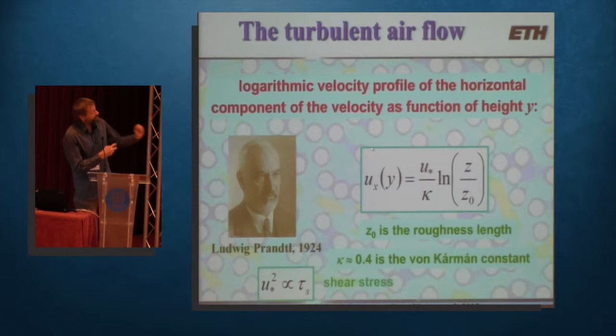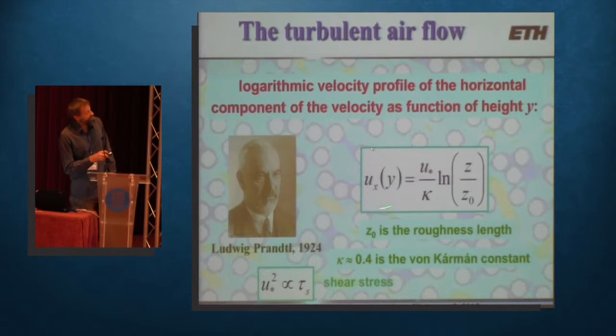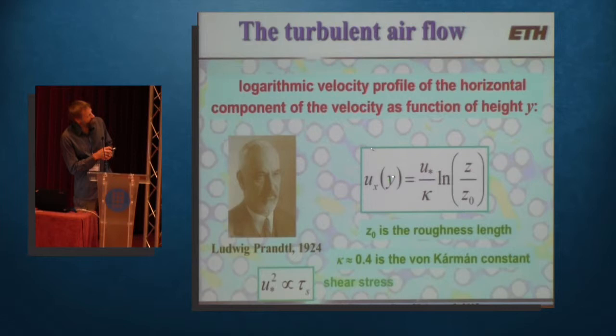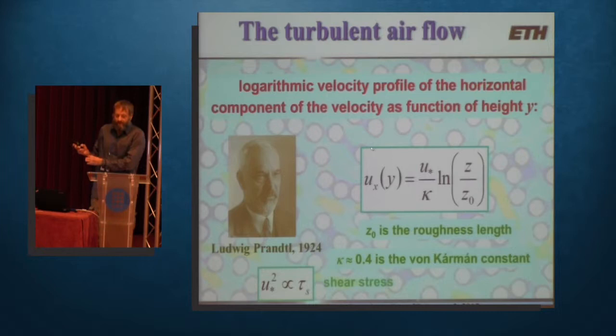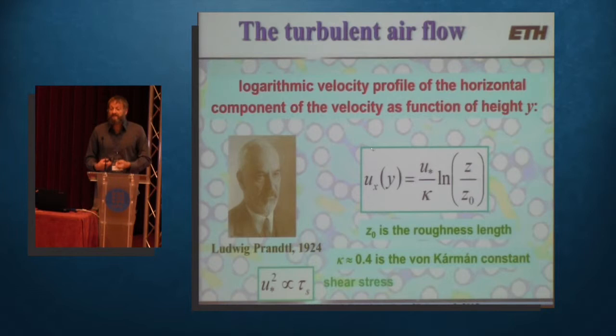To be more precise, let's become more numerical. The velocity increase of the wind going upwards is logarithmic. This is a law known since Prandtl, since a long time. So u_x is the horizontal component of the velocity of the wind at height z. This increases with a logarithm of z times a prefactor called u-star, which is now the measure for the wind strength. Since the wind velocity depends on the height, instead of saying I measure at a given height, I just take the prefactor of the logarithmic law. This logarithmic law is going to be very useful in the next calculations of particles in turbulent flow.